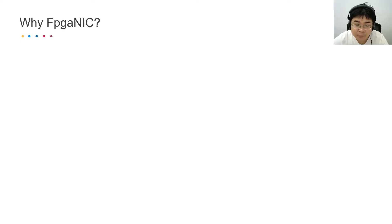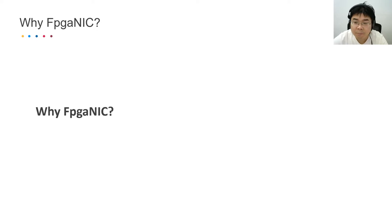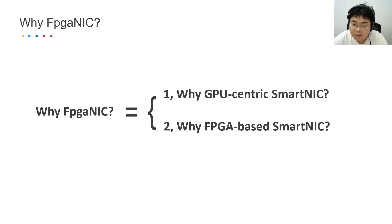Essentially, FBGNIC is an FPGA-based GPU-centric smart NIC for GPU-powered distributed applications. The question of why FBGNIC can be broken down into two questions: why GPU-centric smart NIC, and why FPGA-based smart NIC.